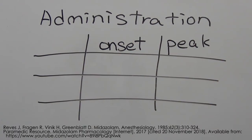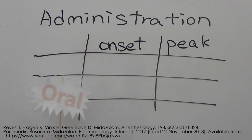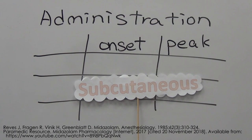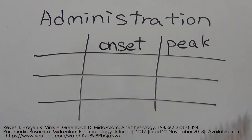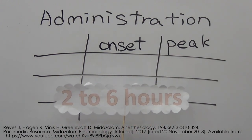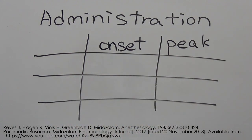Midazolam can be administered through the buccal, intranasal, intravenous, oral, intraosseous, intramuscular, subcutaneous, sublingual, and rectal routes. We are going to focus only on the most commonly used. They all have varying onset of action and peak times, but all have a lasting duration of 2–6 hours. This determines which routes are used to treat patients suffering from different conditions.